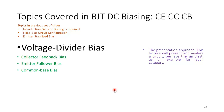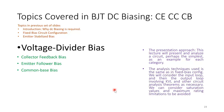As stated in the previous video, the lecture will present and analyze the circuit for each category, perhaps the simplest example for each biasing circuit. All biasing circuits, even though the architectures may differ, use the same approach: we consider the input loop, then the output loop, involving KVL, Ohm's law, voltage divider rule, and perhaps an equivalent circuit.